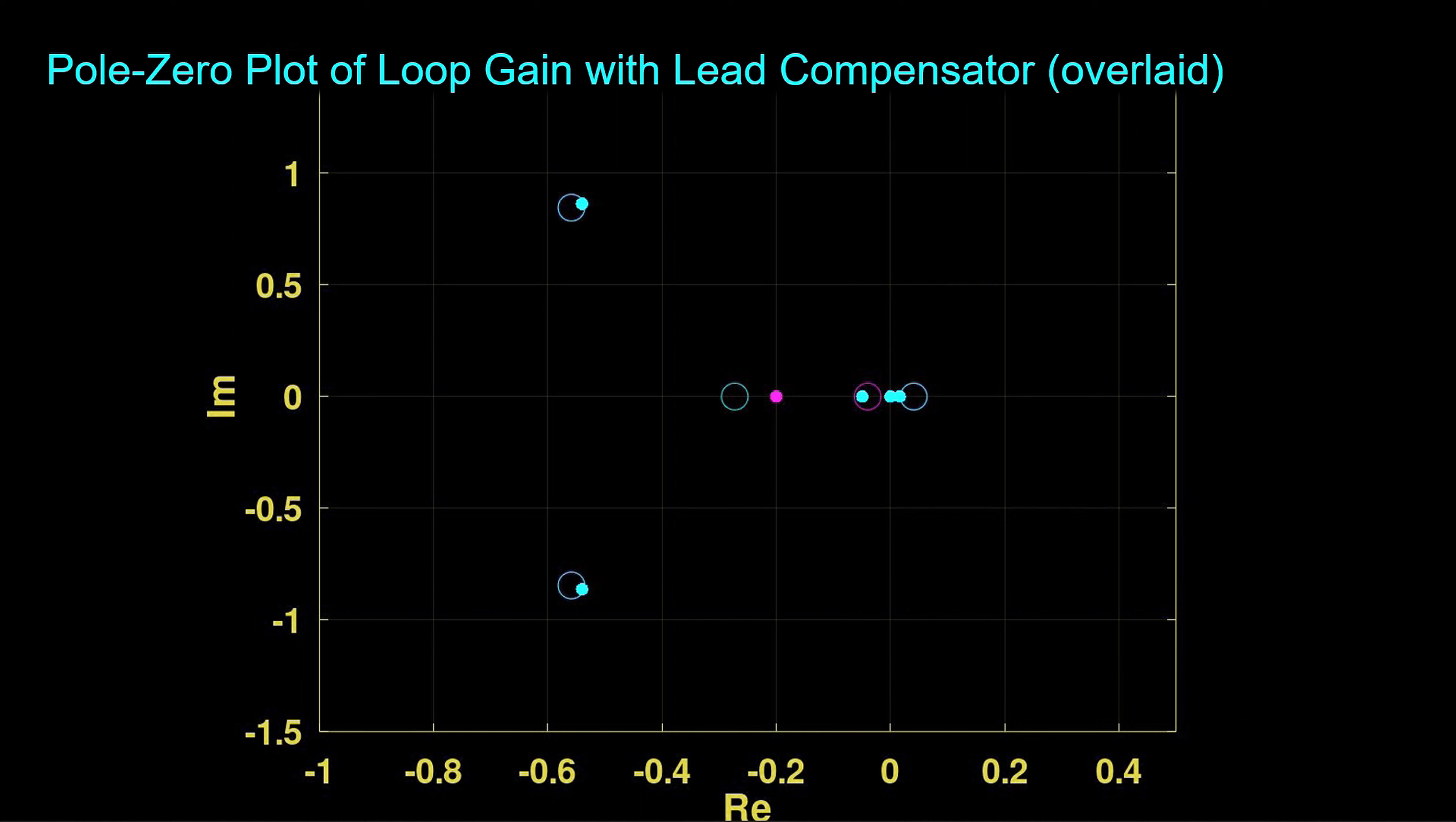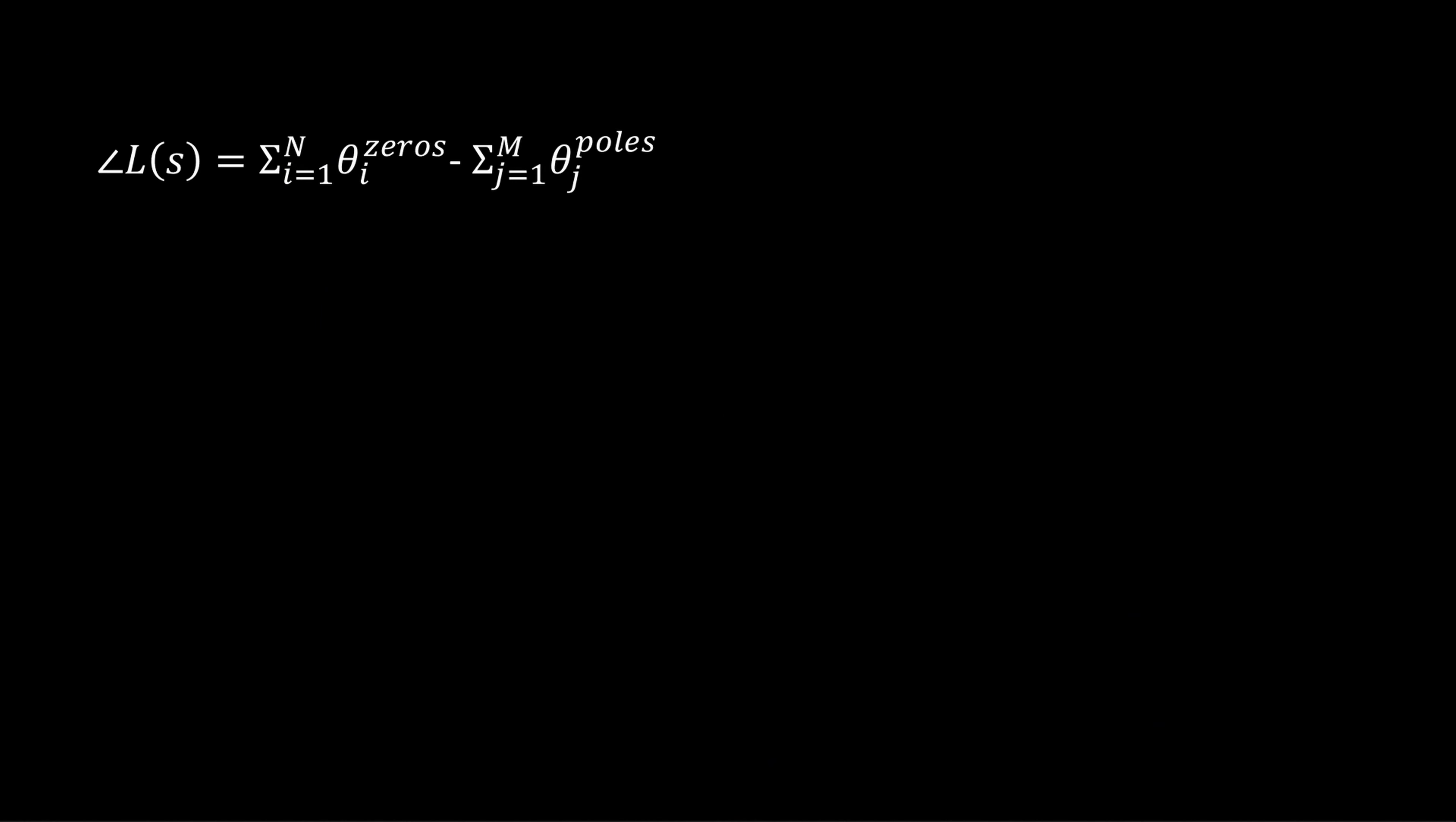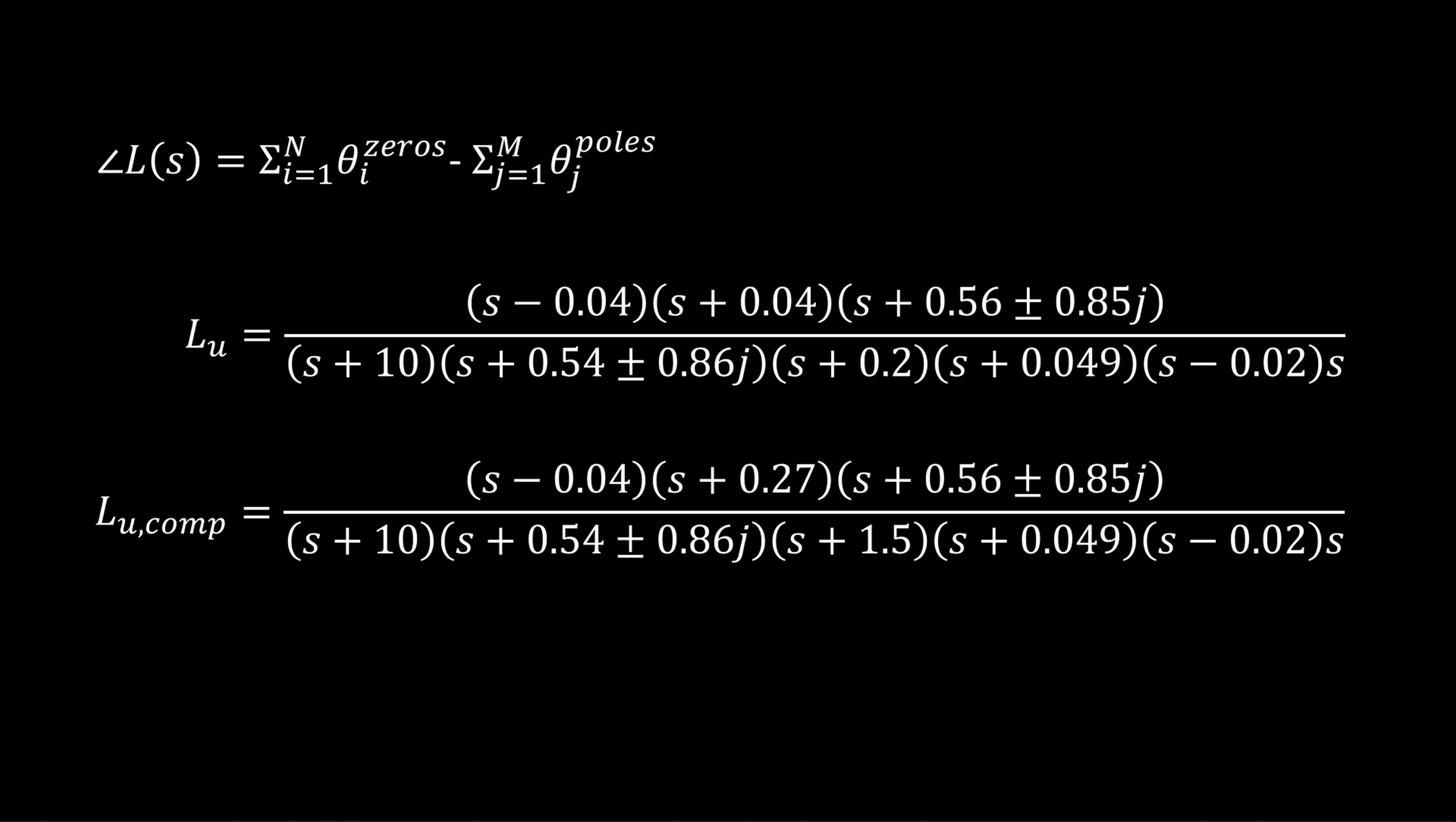This is the pole zero plot for the loop gain with the lead compensator, overlaid on the original loop gain. The lead compensator loop gain, having different pole and zero locations, has different angles to s and therefore a different phase response. The difference is clear in the loop gain transfer functions. Note the different poles and zeros. This leads to different angles that create a different phase response. From this vantage, we can understand the effect of the lead compensator on the loop gain phase angle response. A geometric interpretation also exists for transfer function magnitude, but we won't cover that here. Let's explore the frequency domain a bit further.